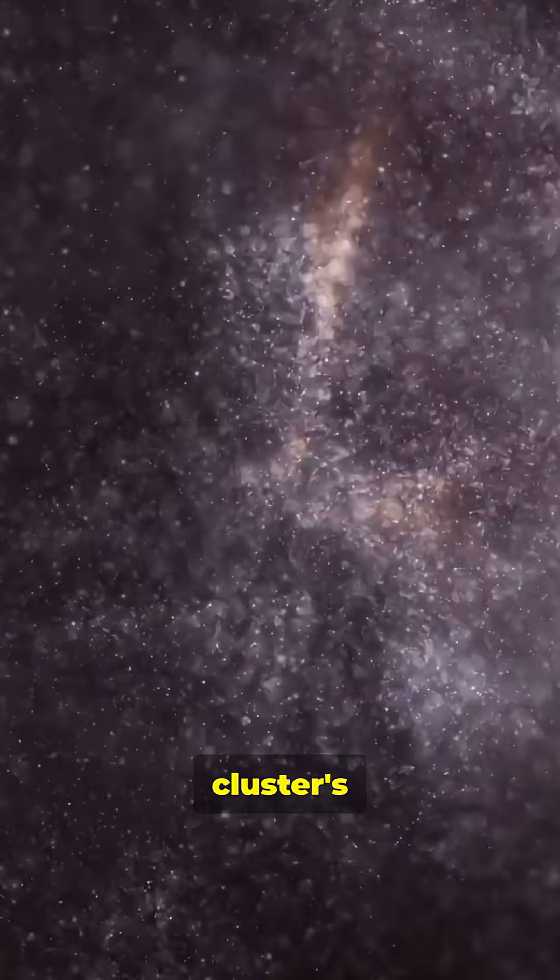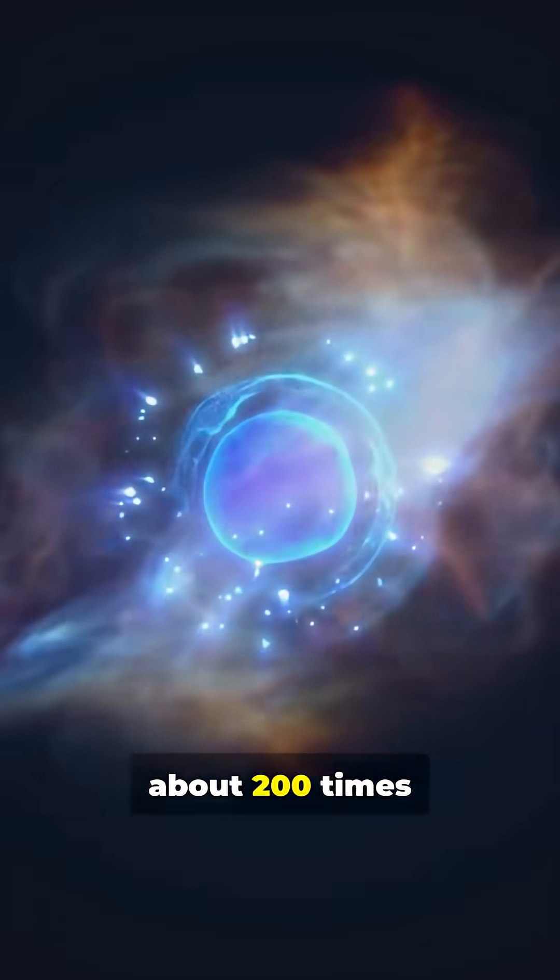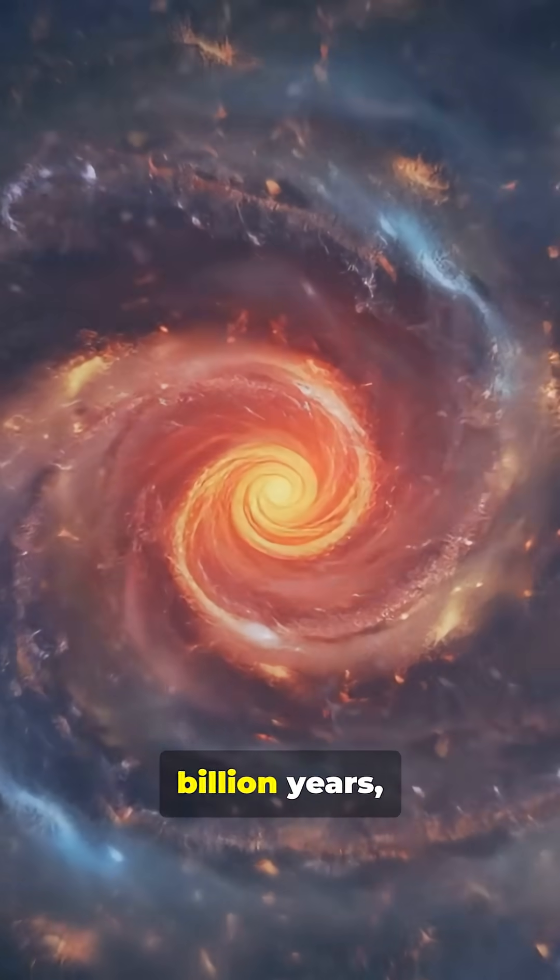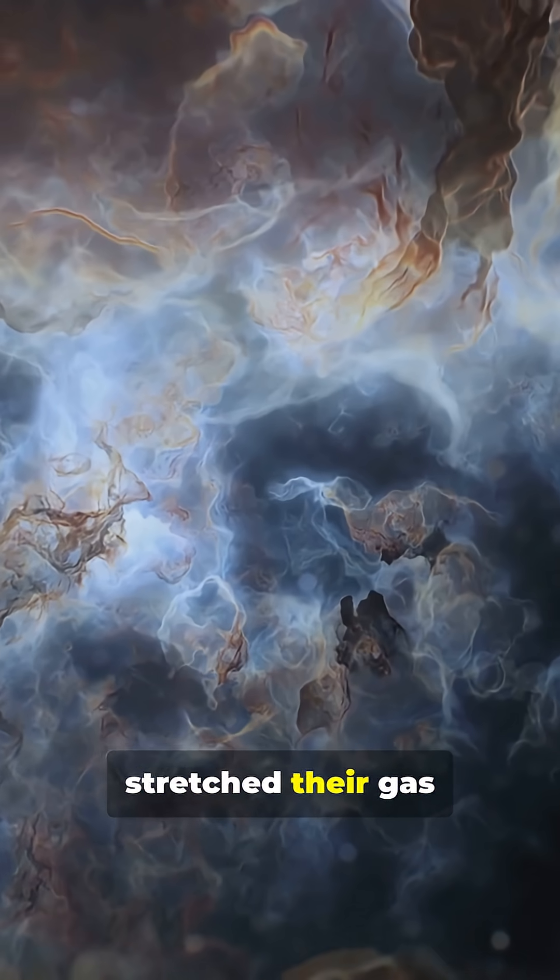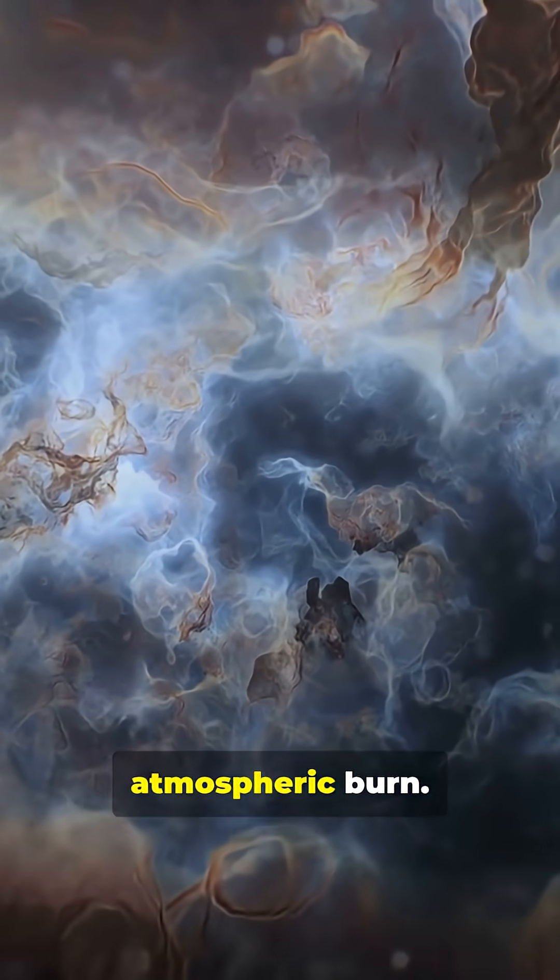They're plunging into the Virgo Cluster's superheated gas about 200 times hotter than the sun's surface over a billion years. Tidal forces plus ram pressure have stripped and stretched their gas like a slow-motion atmospheric burn.